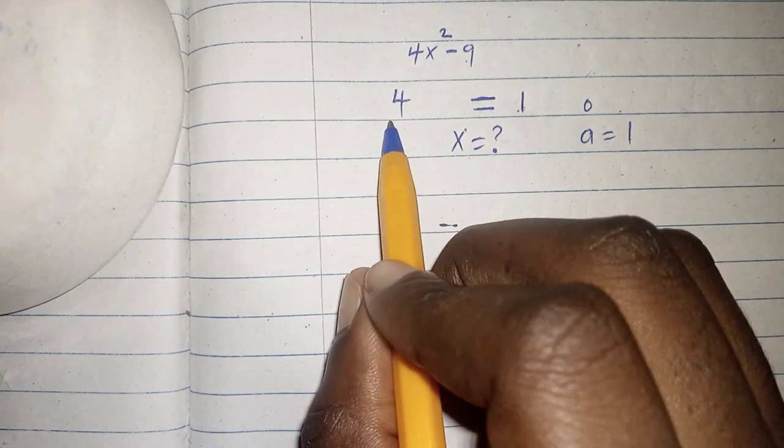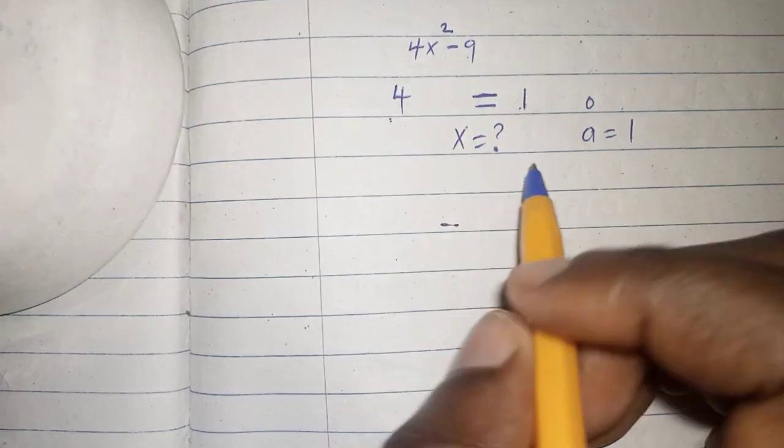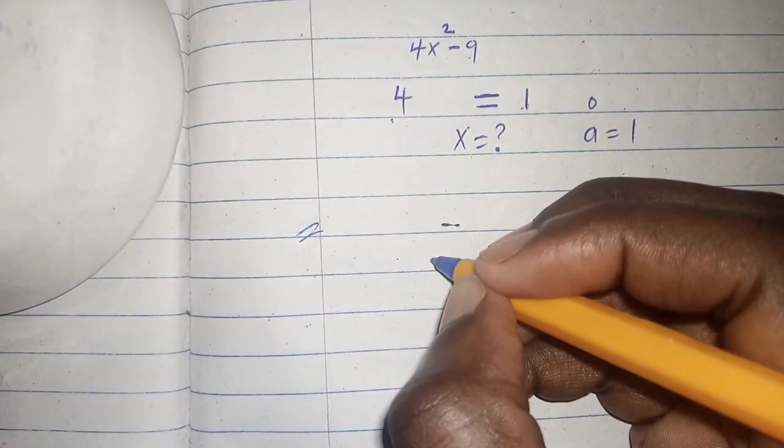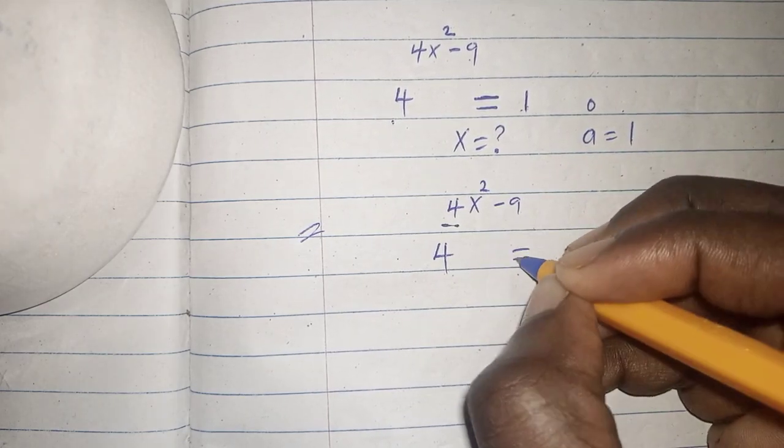On this other side we have 4 as our base, so we can make our bases the same so that we can equate our exponents. Therefore this becomes 4 to the power of 4x squared minus 9 equals